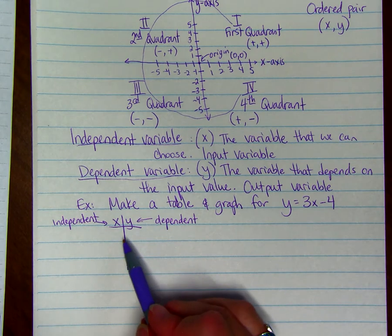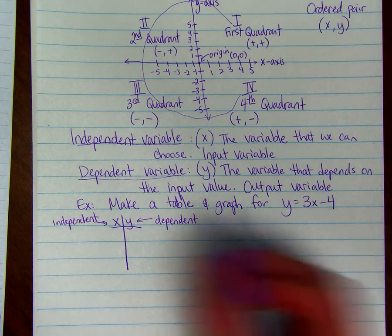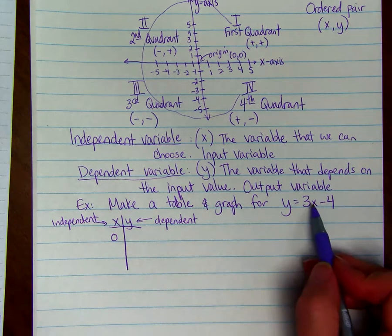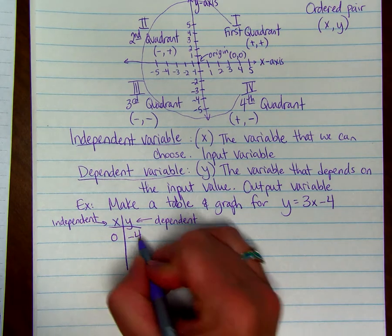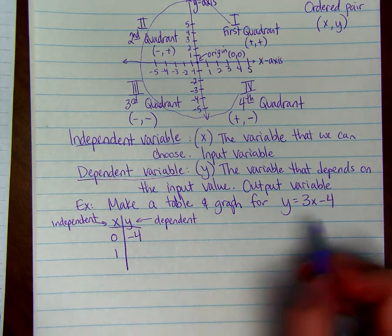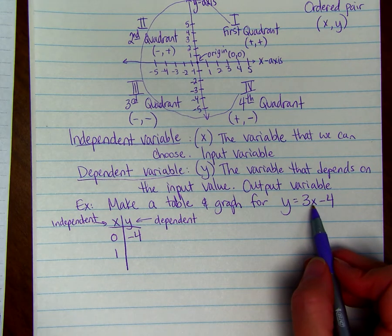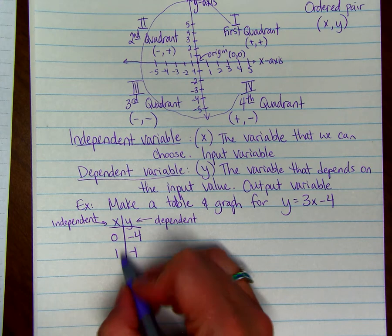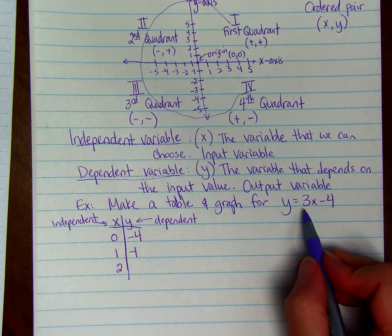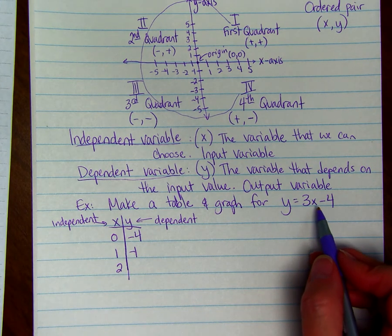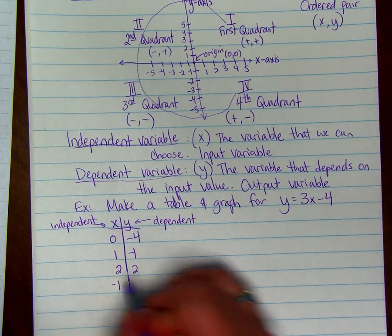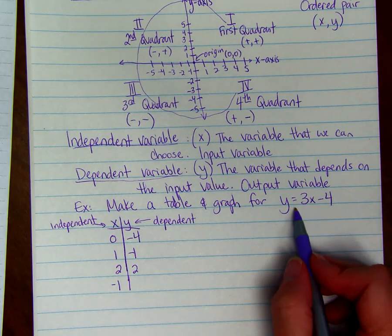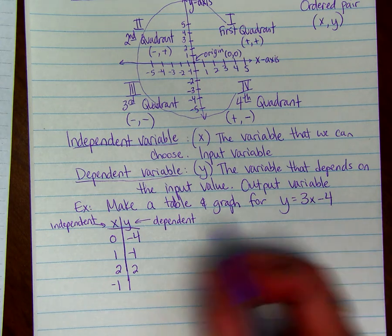So we get to pick a number for x. Any number. We're going to start with 0. If x equals 0 we can do 3 times 0 get 0 minus 4 is negative 4. If x is 1 we have 3 times 1 which is 3 minus 4 is negative 1. How about if x is 2? So we have 3 times 2 is 6 minus 4 is 2. And what if we did a negative number for x? So we'd have negative 3 minus 4 is negative 7.